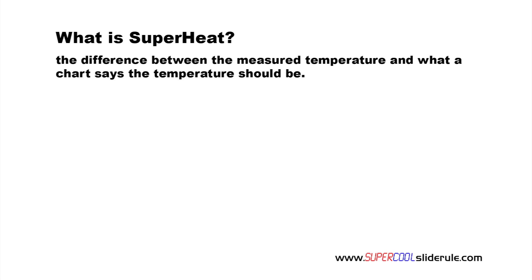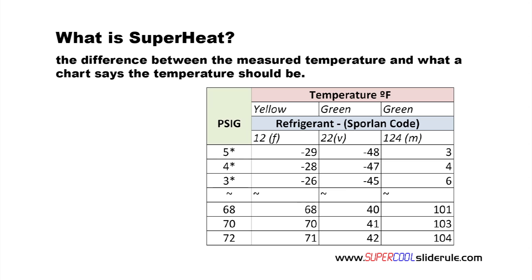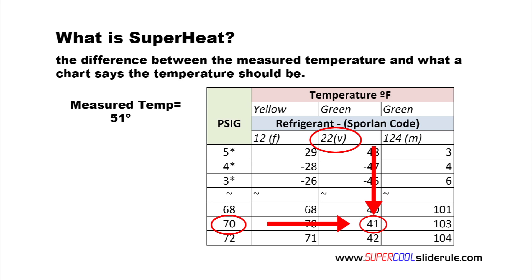Here's an example. If we reference a temperature pressure chart for R22, we will note that at 70 PSI, our temperature should be 41 degrees. If we measure the temperature of the refrigeration suction line and it is actually 51 degrees, this is 10 degrees warmer than it should be. So our superheat is 10 degrees.